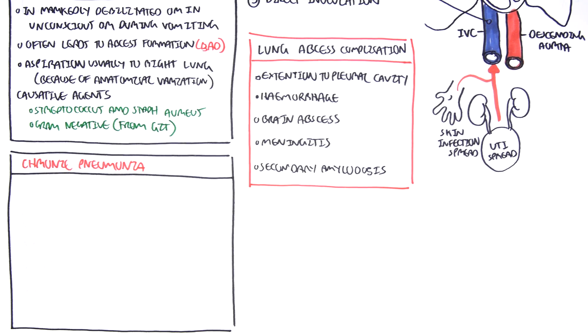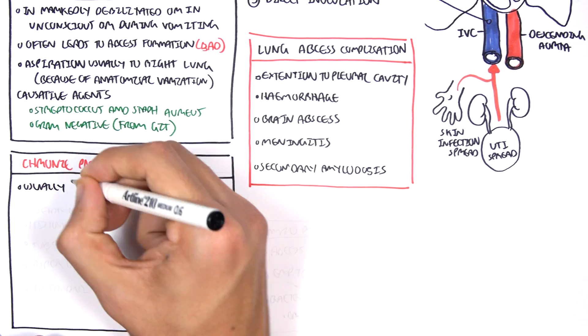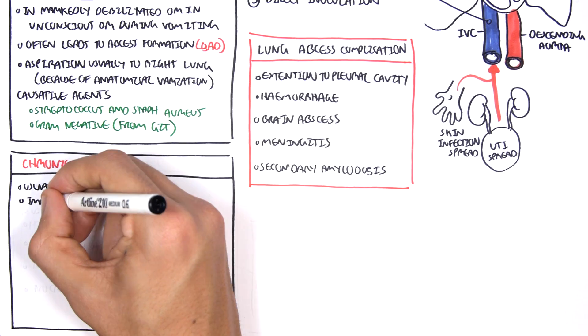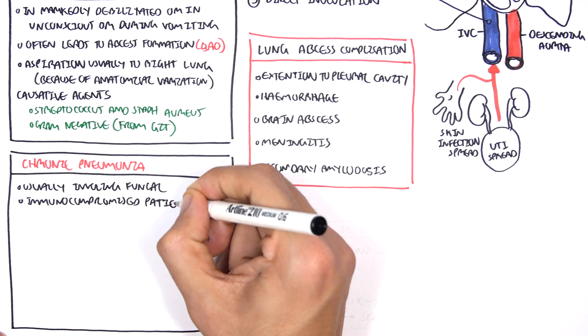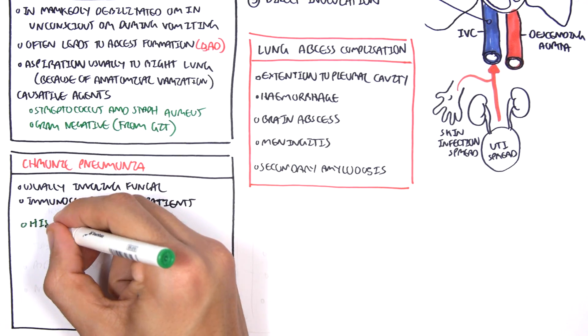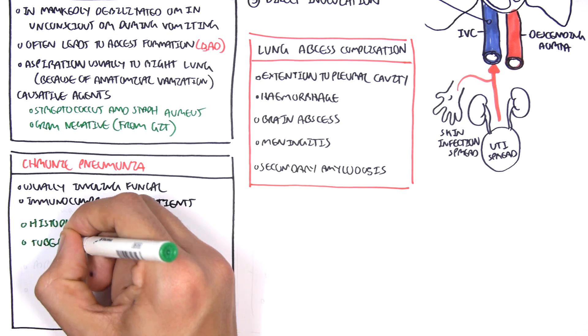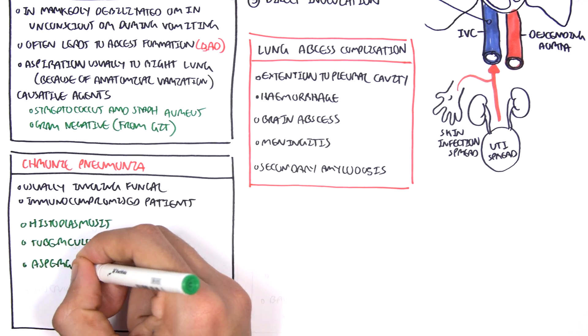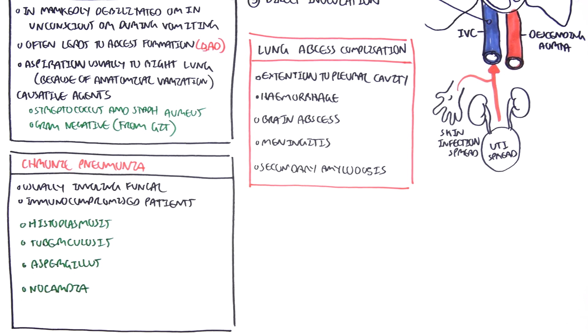Lastly, we will look at chronic pneumonia, and it's usually involving fungus, fungal causative agents, and occurs usually in immunocompromised patients. Four things for chronic pneumonia: Histoplasmosis, tuberculosis, aspergillosis, as well as Nocardia.